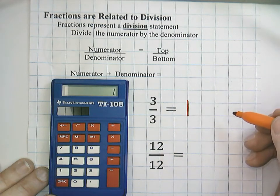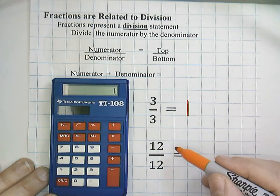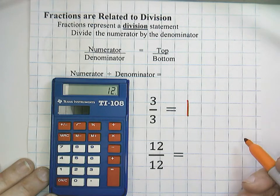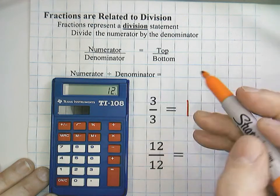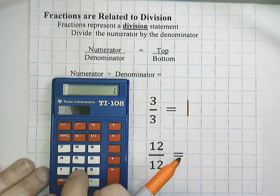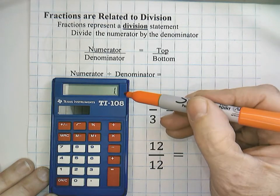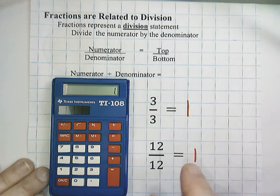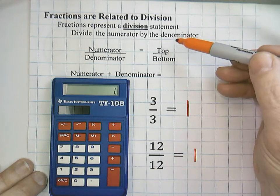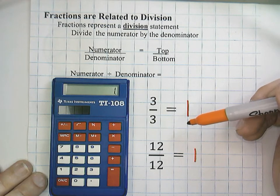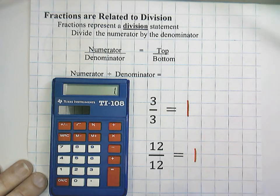That would be true with every whole fraction. For example, 12 over 12 — I type in 12 divided by 12 and push equal, and notice that also equals 1 whole. So a fraction can represent a division statement, and we'll get into that more later when we do money problems, but keep that in mind.